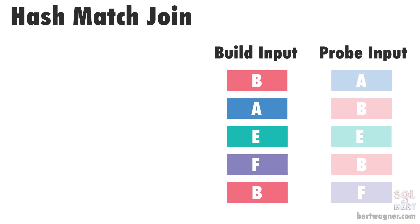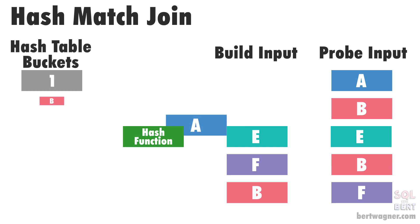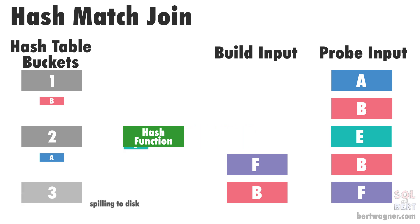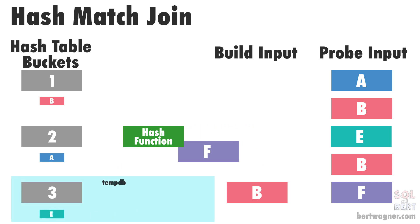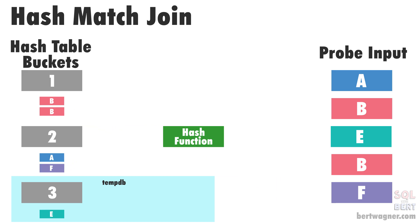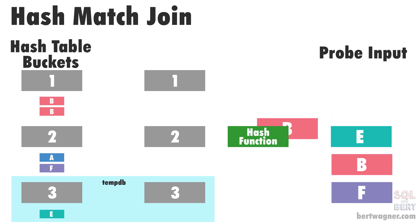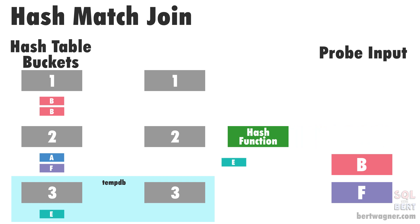The way this works is that during the build phase, if SQL Server can't create the entire hash table in memory because it's just too large, it can start spilling to tempDB. SQL Server will keep as many buckets as it can in memory, and whichever ones it can't keep will get stored in tempDB. Then during the probe phase, SQL Server joins any rows of data that are in that in-memory hash table, and any hashes it doesn't find in that hash table it writes to tempDB.